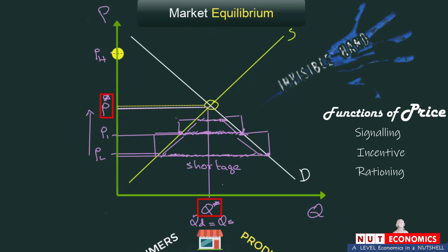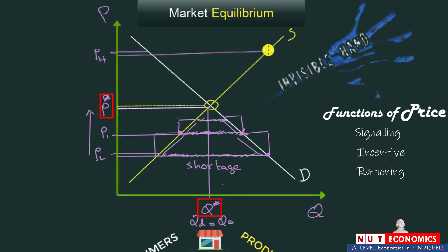At the high price PH, consumers rush out of the market and producers rush in, attracted by high prices and high profit potential. This creates a surplus — too many producers but too few consumers. The graph shows this clearly: at PH, quantity demanded is just the short distance to the demand curve, whereas quantity supplied extends all the way to the supply curve. This excess supply is the surplus.